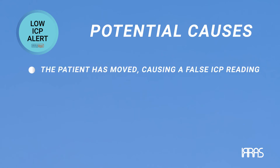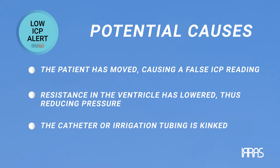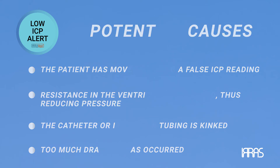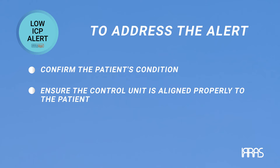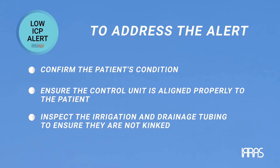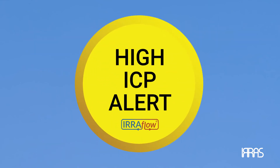Potential causes of a low ICP alarm could be: one, the patient has moved causing a false ICP reading; two, resistance in the ventricle has lowered, reducing pressure; three, the catheter or irrigation tubing is kinked; four, too much drainage has occurred. To address a low ICP alarm: one, confirm the patient's condition; two, ensure the control unit is aligned properly to the patient; three, inspect the irrigation and drainage tubing for kinks; four, confirm that the catheter is not kinked.